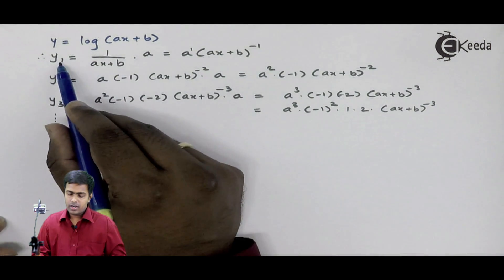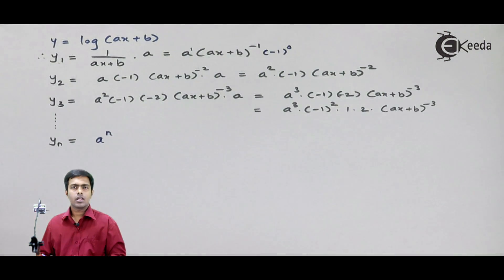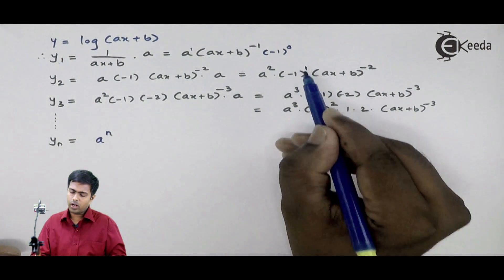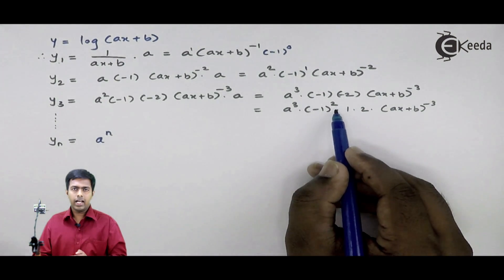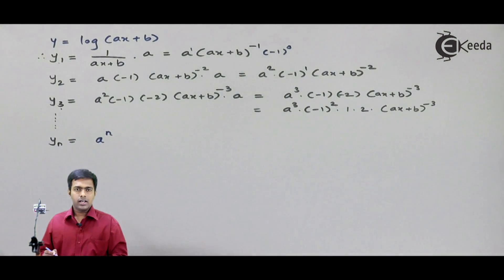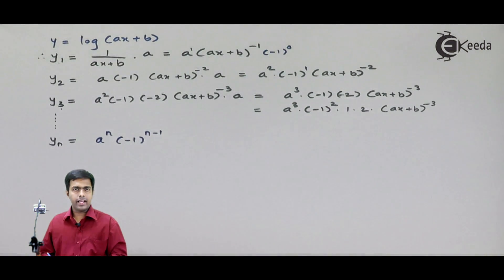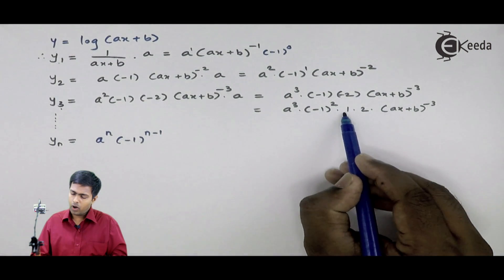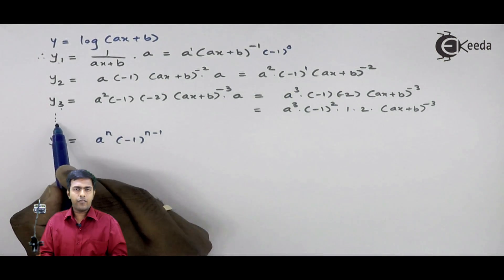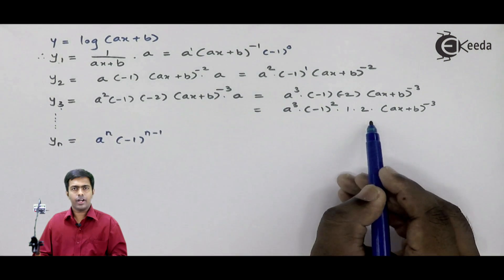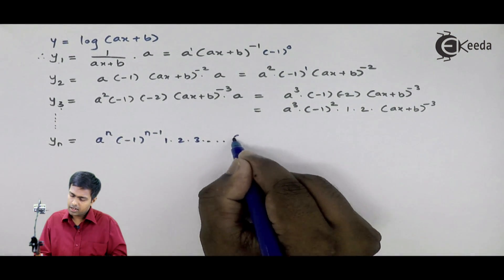Next, in y1 we were not having any (minus 1) raised to term — it means we were having (minus 1) raised to 0. In y2 we got (minus 1) raised to 1. In y3 we got (minus 1) raised to 2. So every time we are getting the power 1 less than the value of the derivative. So in the nth derivative, I will get (minus 1) raised to n minus 1. Next, in y3 we got 1 into 2, in y2 we just got 1. So when I find y4, I get the series 1 into 2 into 3. So for yn, I will get this series as 1 into 2 into 3 till n minus 1.